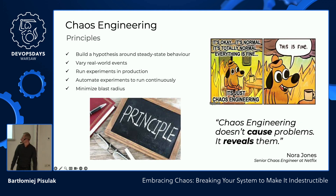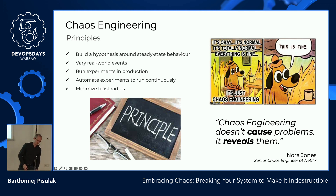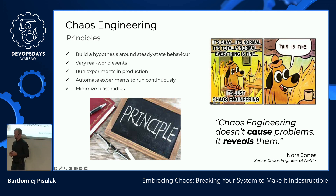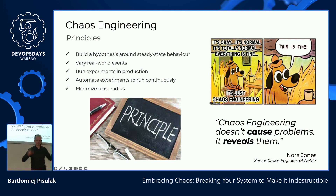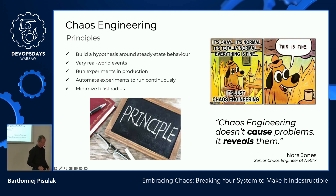Talking about principles of chaos engineering — there are five principles, defined by people working at Netflix. First: build hypotheses around steady-state behavior. Steady-state behavior is basically the state in which your system is behaving normally. You have to think about and define what normal behavior for your system is.